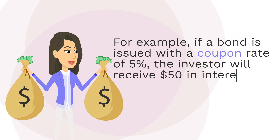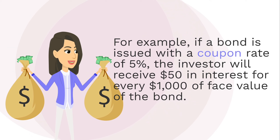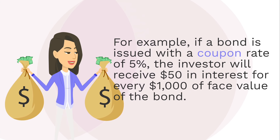For example, if a bond is issued with a coupon rate of 5%, the investor will receive $50 in interest for every $1,000 of face value of the bond.